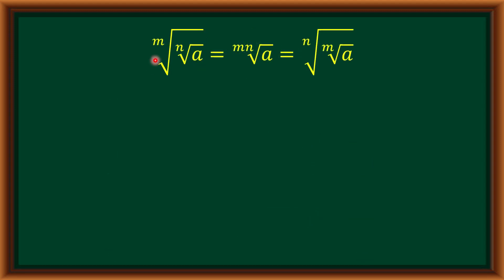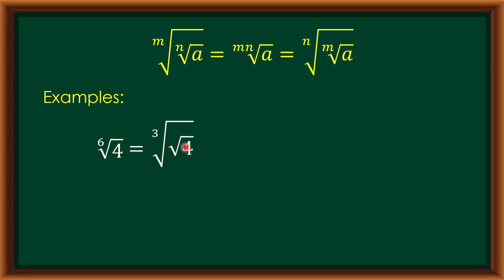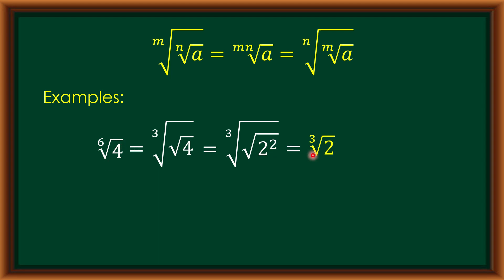Let us have our last law, which states that the nth root of the mth root of a is equal to the m times nth root of a, which is also equal to the nth root of the mth root of a. For example, we have the 6th root of 4. Let us reduce the index by writing it as the cube root of the square root of 4, since 3 times 2 equals 6. Since 4 is a perfect square, we write it inside the square root as 2 squared. Applying the first law, where the index and exponent are equal, we consider the base. So the 6th root of 4 equals the cube root of 2.